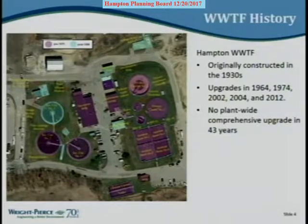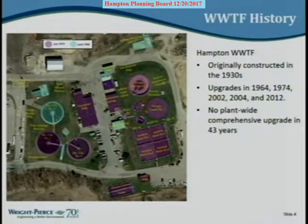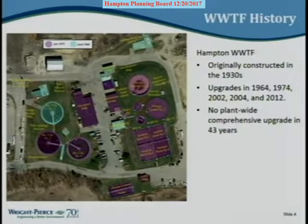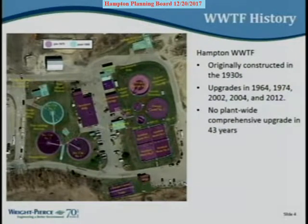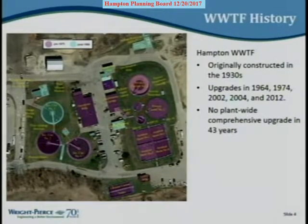The plant was upgraded in 1964. The big upgrade converting it to a secondary treatment plant - where waste is biologically treated - was in 1974, with the tanks still there today. There were miscellaneous upgrades in 2002 and 2004, and dewatering was done in 2012. Essentially all tanks except one of the three secondary clarifiers date from the 1974 upgrade, and in 2002 some internals of the aeration tanks were also updated.